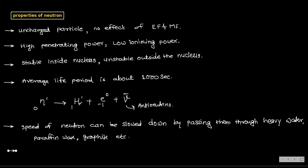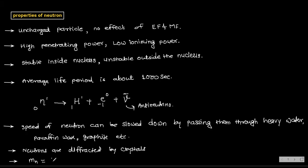Neutrons are diffracted by crystals. And the last property — the mass of the neutron: mn = 1.6750 × 10⁻²⁷ kg, which is equal to 1.00866 atomic mass units (u). So these are the properties of neutron — note them down.